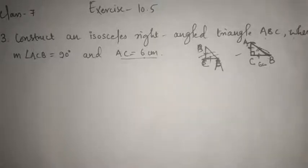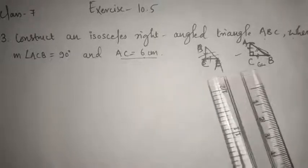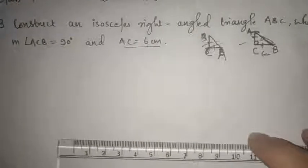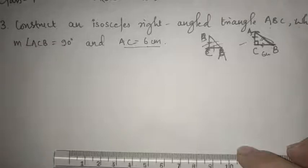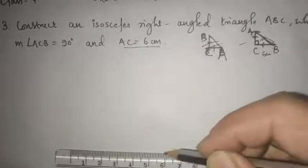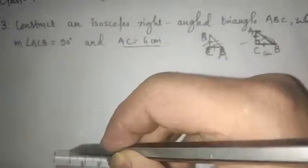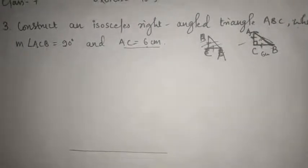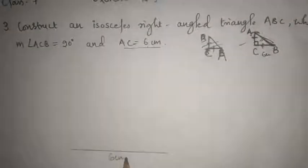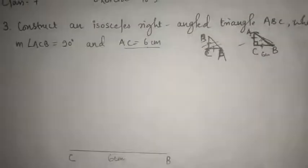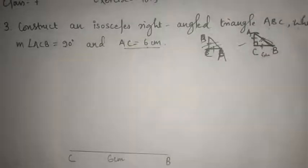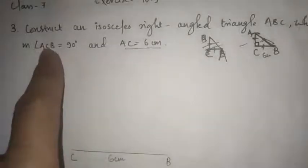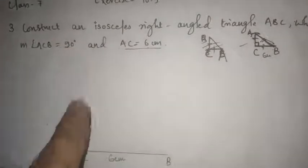So let us start doing. First of all, we have to make CB which is 6 centimeter. So here it is 6 centimeter I have drawn. So write down the measurement, write down the name of the side. And now you will make 90 degree from the point C because the measure of angle ACB is equal to 90 degree.